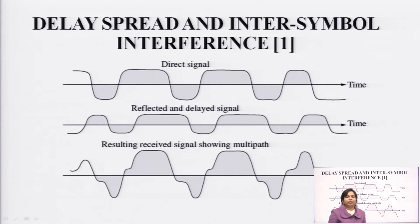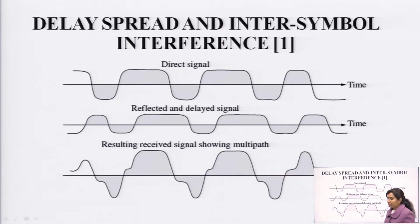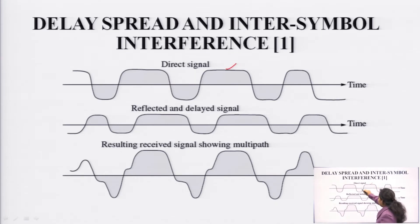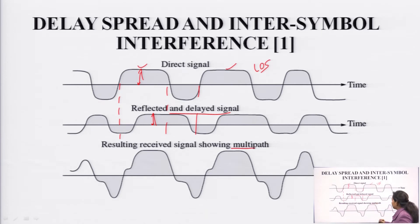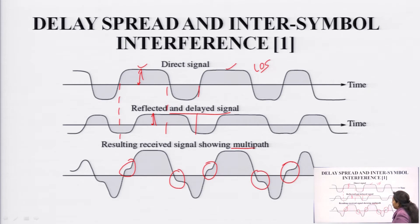Next is delay spread and inter-symbol interference. Delay spread occurs when the transmitted signal spreads — every signal will spread due to noise, which changes the amplitude. The direct signal has line of sight between transmitter and receiver. The reflected and delayed signal has reduced amplitude due to reflection. The received signal shows multipath — it is a delayed version of the direct signal, and noise affects the signal quality.